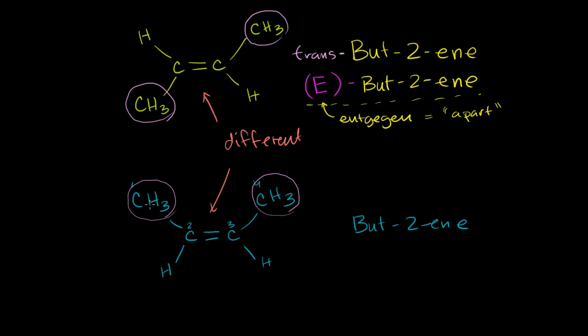Now, in this situation where our functional groups are on the same side, you could call this cis-but-2-ene. Cis, I believe, comes from the Latin for together, or you could call it Z, or you could call it Z-but-2-ene. And you could imagine this Z comes from the German for together, and it stands for zusammen, which is German for together.